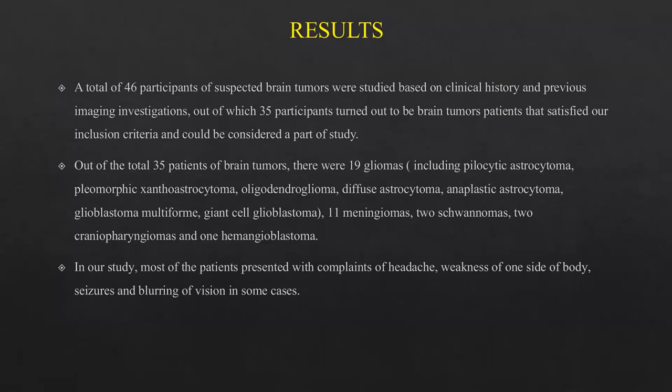In total, 35 patients of brain tumors satisfied the inclusion criteria. Of these, there were 19 cases of gliomas including pilocytic astrocytoma, pleomorphic xanthoastrocytoma, oligodendroglioma, diffuse astrocytoma, anaplastic astrocytoma, glioblastoma, and giant cell glioblastoma; 11 meningiomas; 2 schwannomas; 2 craniopharyngiomas; and 1 hemangioblastoma. Most patients presented with complaints of headache, weakness of one side of the body, seizures, and blurring of vision in some cases.